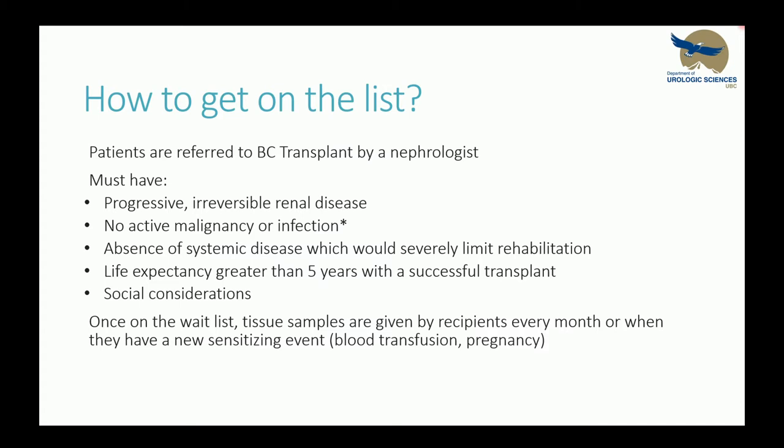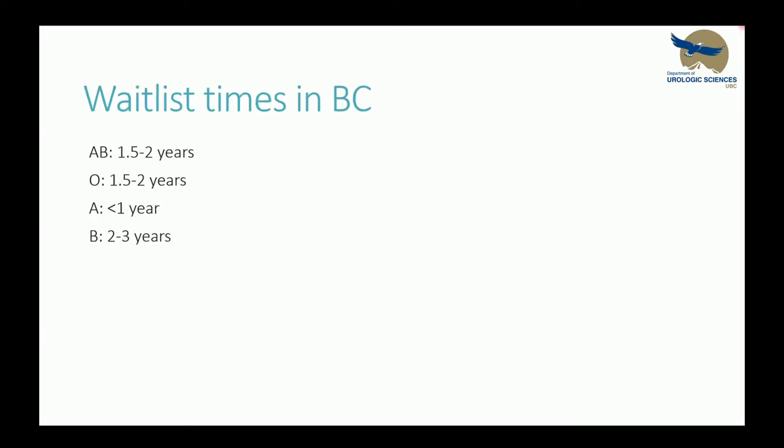Once on the waitlist, patients get serum samples about every month or so, or whenever they have a new sensitizing event like a blood transfusion or pregnancy, in order to keep their immunologic profile up to date. Current waitlist times are segregated by blood type, ranging from under a year for type A to up to three years for type B. These wait times are drastically lower than US counterparts and lower than most other provinces, because we have a very active deceased donor organ pool and are very aggressive with marginal donors.